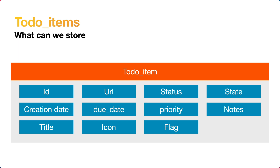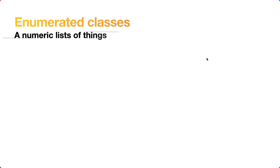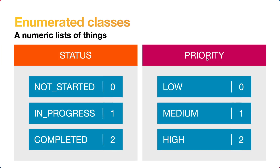In our to-do item we're going to store an ID unique to this particular item. We could have a URL if it's a web link, a status, a state whether it's active or not, a creation date, a due date, a priority, some notes, a title which is a brief description or name, an icon — maybe an emoji — and finally a flag to mark certain items. Rather than storing text like 'not started', 'in progress', or 'completed' we'll store integers: 0, 1 and 2. For priority it's the same: low maps to 0, medium to 1, and high to 2. We'll do that by creating some enumerated classes.